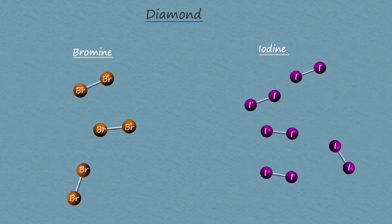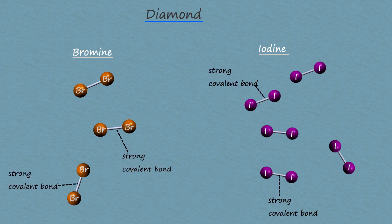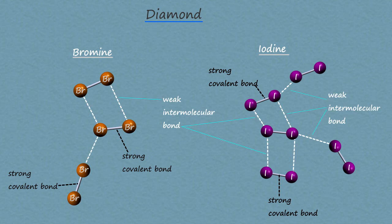Iodine and bromine are two halogens found in group 7 of the periodic table. Both iodine and bromine consist of small diatomic molecules — that is, a small molecule composed of only two atoms as shown on the screen. The bond holding these molecules together is a strong covalent bond, but the intermolecular bonding between different molecules is very weak and easily broken.